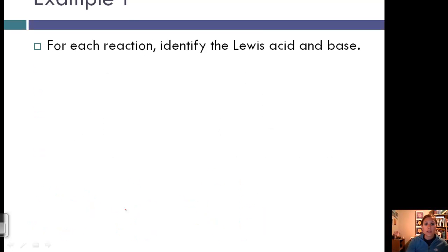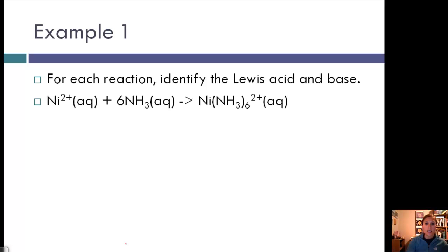Let's look at some practice examples. For each reaction, identify the Lewis acid and Lewis base. Here we have Ni²⁺ and 6NH3. Drawing the Lewis structure, ammonia has a lone pair and three hydrogens. Since ammonia has the lone pair, it's the Lewis base and nickel is the Lewis acid. This creates a bond between nickel and the 6 ammonia molecules.